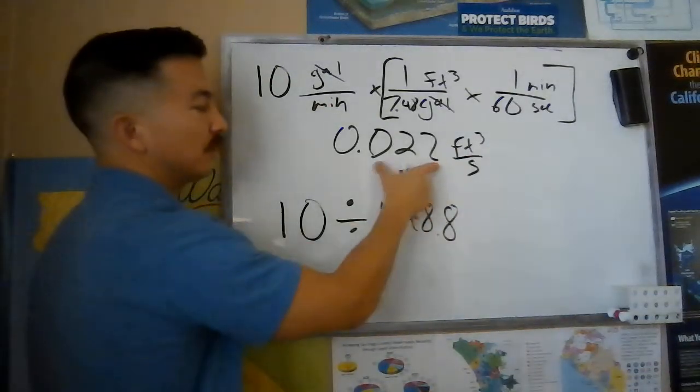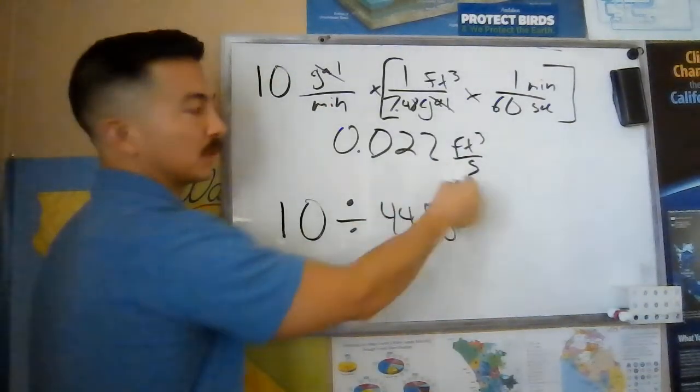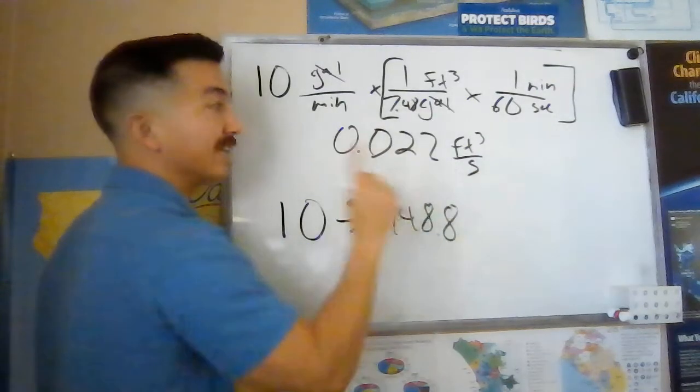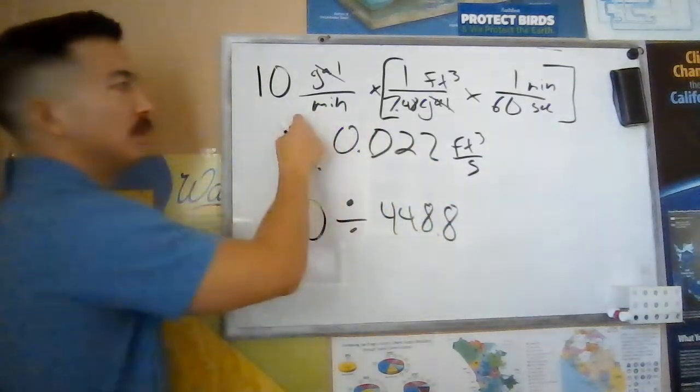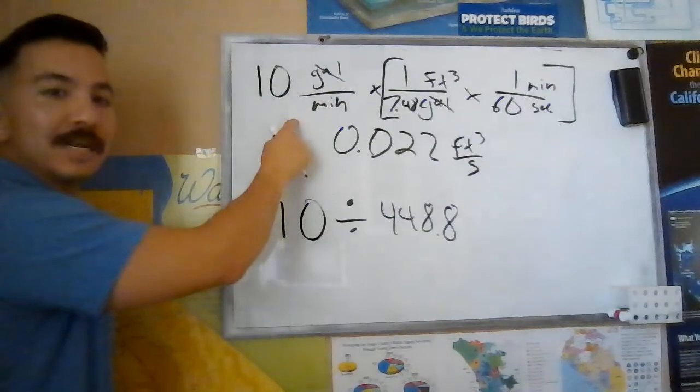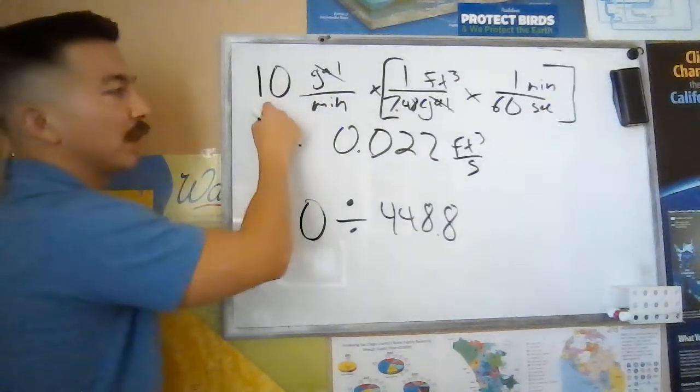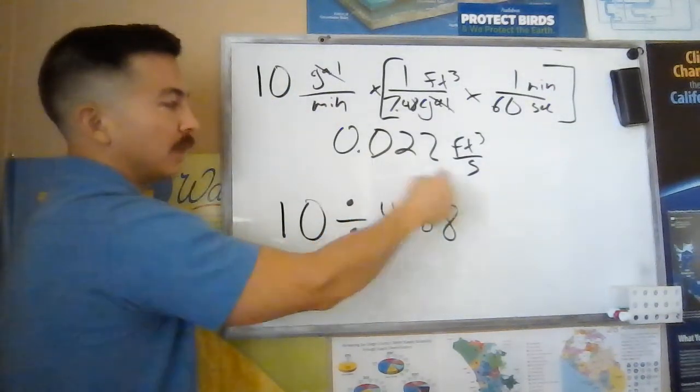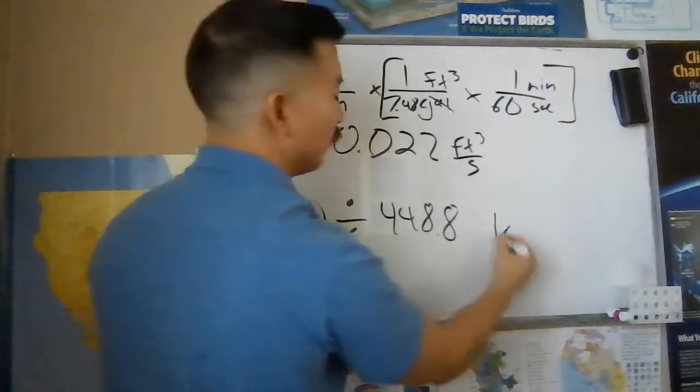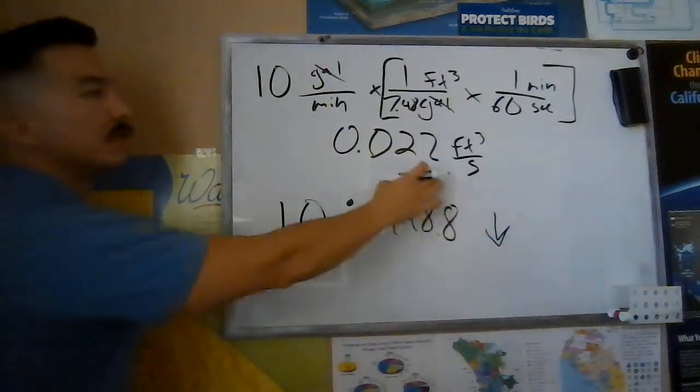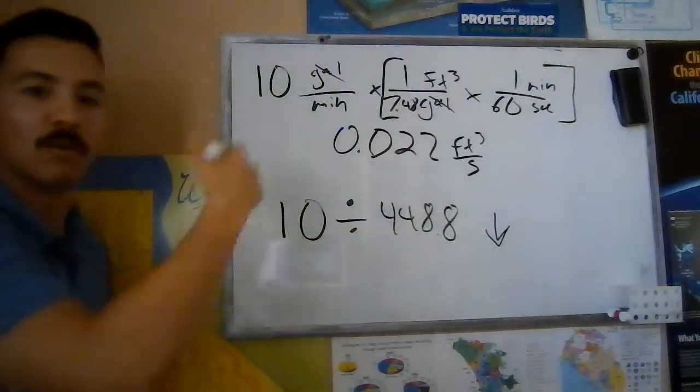Remember that in cubic feet per second, the number should be smaller because we're talking about the water that passed through in just one second as opposed to gallon per minute. We're talking about 60 seconds, right? So going from gallon per minute to cubic feet per second, my number should always go down. To go from CFS to GPM, my number should go up.